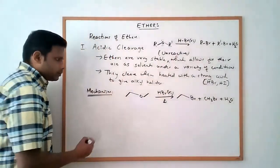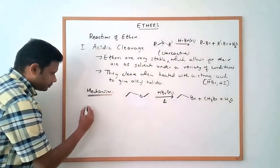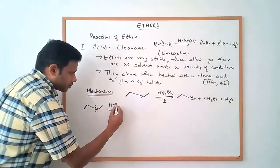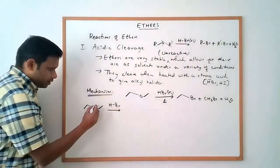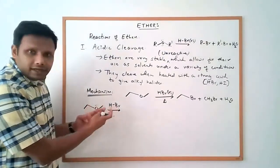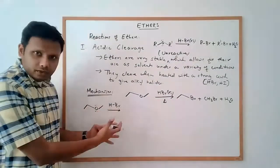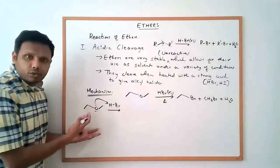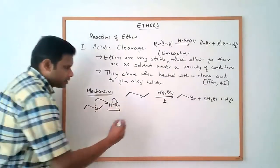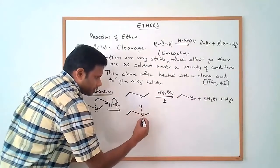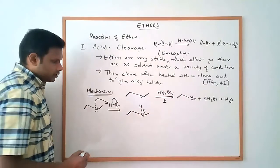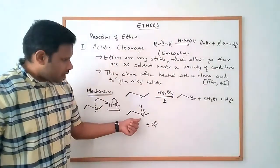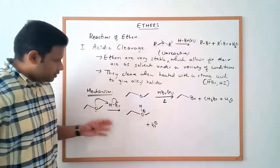Let's look at the mechanism. Under the reaction conditions — ethyl methyl ether in the presence of a strong acid under forcing conditions — the initial reaction is an acid-base reaction. The ether acts as a base and uses its lone pair to get protonated by the acid. So the ether molecule gets protonated, and by the end of this step we get the protonated ether plus Br minus.